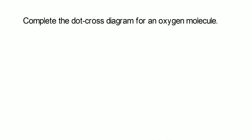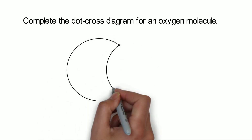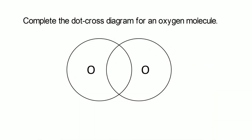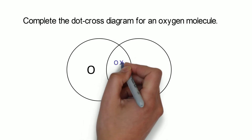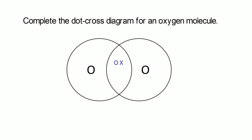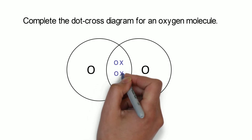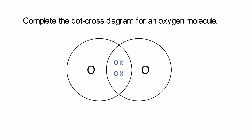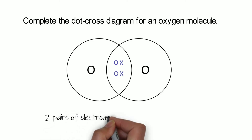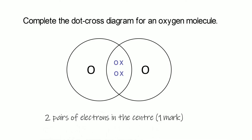Let's try a slightly different one — oxygen. Oxygen is in group six, which means it has six electrons in its outer shell, so it needs to gain two electrons. Whereas fluorine and chlorine needed to gain one, oxygen needs to gain two. So in the centre we draw two shared pairs of electrons — it forms two covalent bonds, in other words a double bond. That is our first mark. If we just drew one pair in the centre we wouldn't get the mark; it must be two because it needs to gain two electrons.